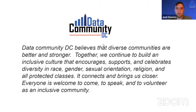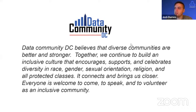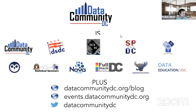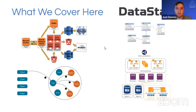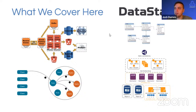We are part of a larger community. Data Community DC is a diverse and inclusive culture — we support people of all races, gender, and sexual orientations. Everyone's welcome here. You can find out more about Data Community DC at their blog, along with upcoming events. What we cover here is everything related to Cassandra and the surrounding ecosystem: Spark, Kafka, DataStax, Scylla — all things Cassandra.